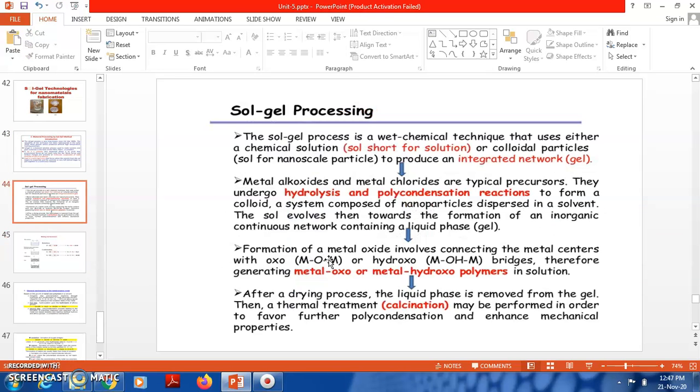The sol-gel process is a chemical technique that uses either chemical solution (sol for solution) or colloid particles (sol for nanoparticles) to produce an integrated network. Metal alkoxides and metal chlorides are typical precursors.